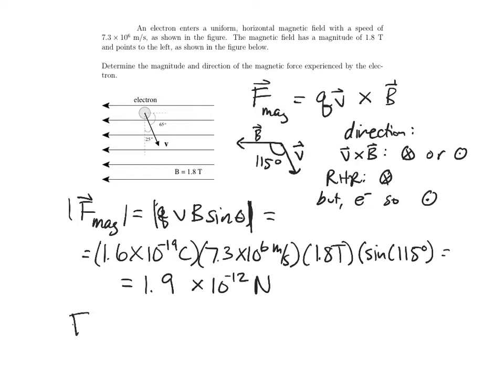And that means I can write the force on this electron is then 1.9 times 10 to the minus 12 newtons, and direction is coming out of the page.